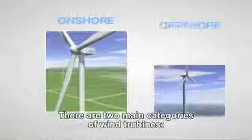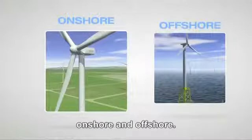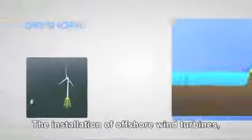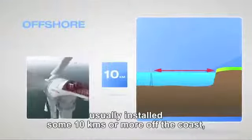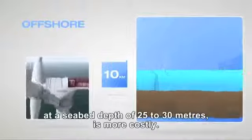There are two main categories of wind turbines, onshore and offshore. The installation of offshore wind turbines, usually installed some 10 kilometers or more off the coast, at a seabed depth of 25 to 30 meters, is more costly.